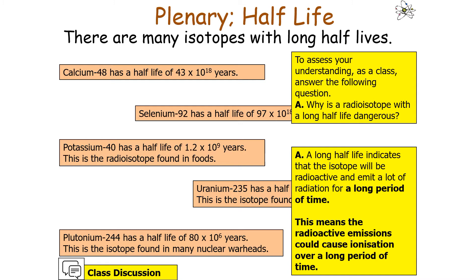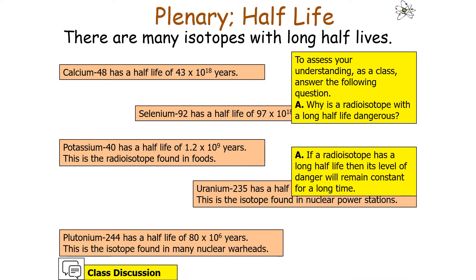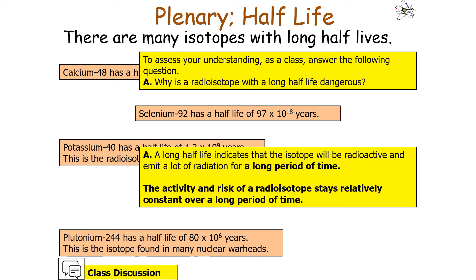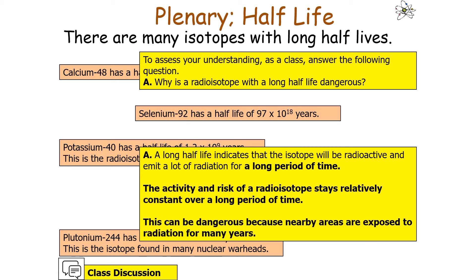A long half-life indicates that the isotope will be radioactive and emit a lot of radiation for a long period of time, meaning radioactive emissions can cause ionisation over a long period of time. If a radioactive isotope has a long half-life, its level of danger and activity remain constant for a long time. This means the risks associated with long half-life isotopes do not decrease much in a human lifetime, and nearby areas are exposed to radiation for many, many years.